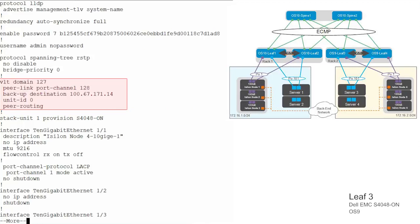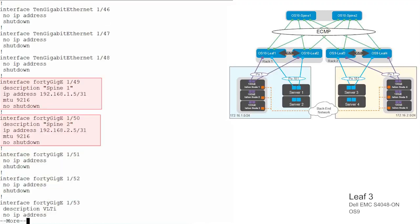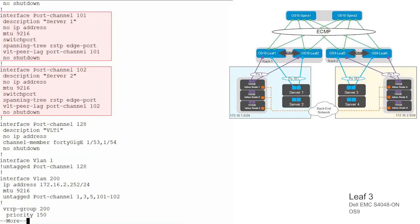Port channel 128 is created for VLT. Ports 53 and 54 are added to a static LAG. Configure ports 1, 3, 5, 17, and 19. Define port channels and configure symmetric flow control. Assign an IP address to upstream point-to-point interfaces 49 and 50. Configure port channels 1, 3, 5, 101, and 102.